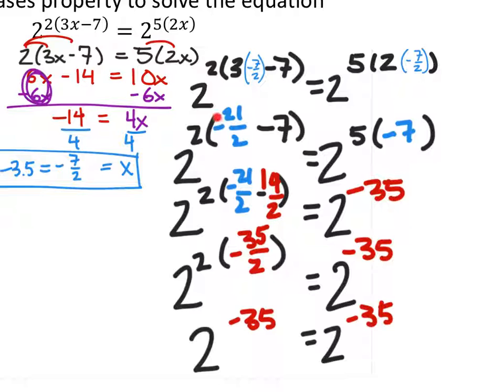I multiplied in here to get these. I didn't evaluate 2 to the power of negative 35 because it's such a small number. But I know if I have the same bases and the same exponents, it would give me the same value anyway.